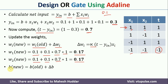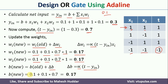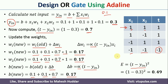We also update the bias: b_new = b_old + Δb, where Δb = α × (t − y_in). We exclude xi here because the bias input is always 1. So b_new = 0.1 + (0.1 × 0.7) = 0.17. The error for this input is (t − y_in)² = (0.7)² = 0.49. This is the error with respect to the first input.